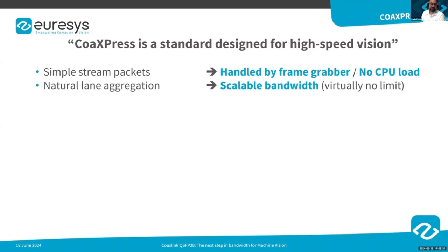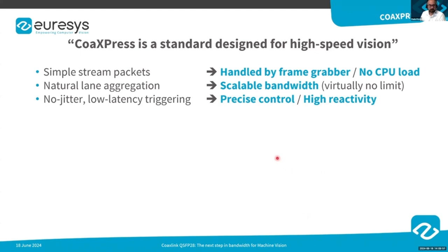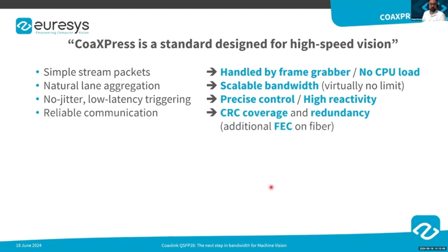CoaXPress has natural lane aggregation, so bandwidth is scalable — it's simply a matter of adding more connections. Today we can find cameras in the market with 8 or 16 connections used to scale up bandwidth. It has no jitter and low latency triggering, providing precise control and high reactivity. It also provides reliable communication, as all data is covered by CRC.